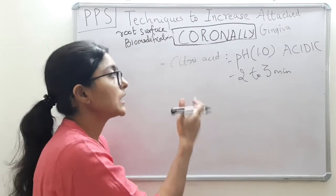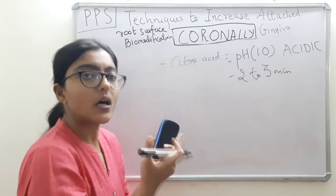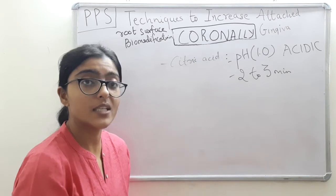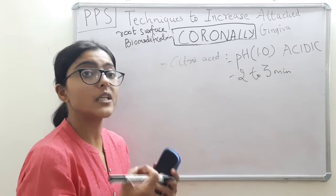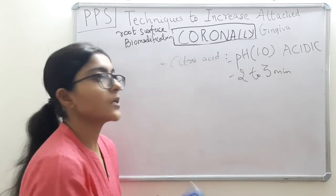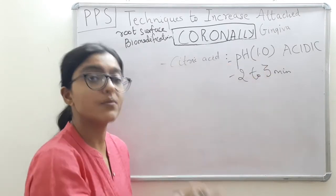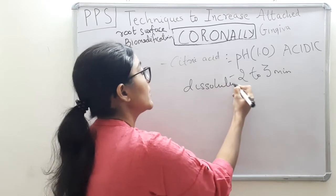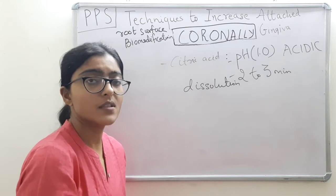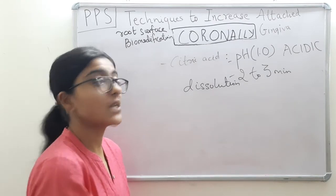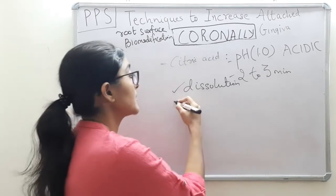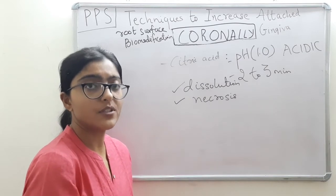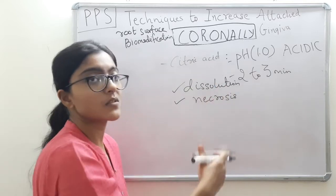Regarding the mechanism of citric acid: it demineralizes the root surface, detoxifies it, but also has the drawback of decomposing or dissolving collagen. At pH 1, it may end up dissolving the collagen bundles rather than just exposing them. It will also lead to tissue necrosis of surrounding tissues — that collateral damage is a significant drawback associated with citric acid.